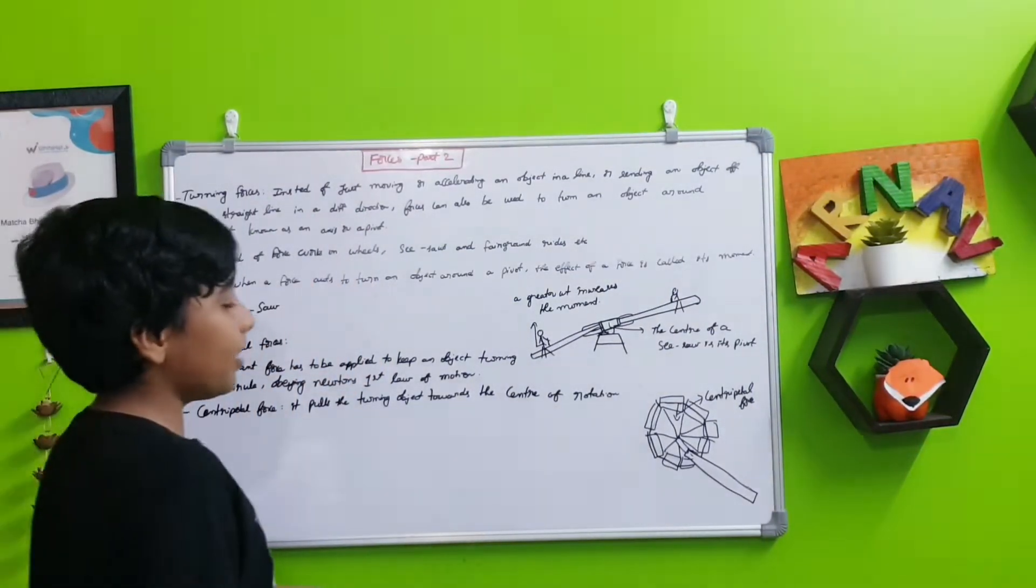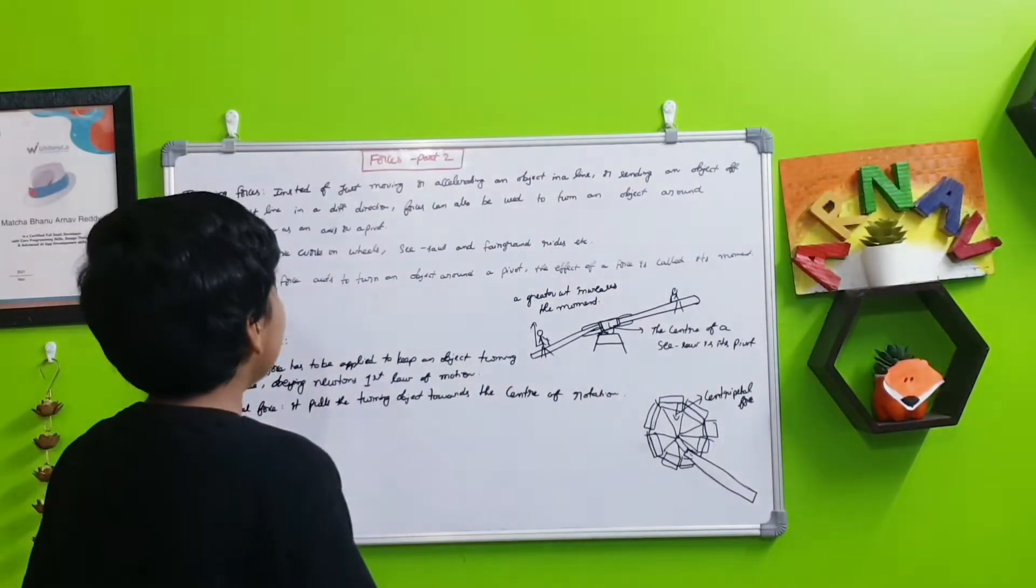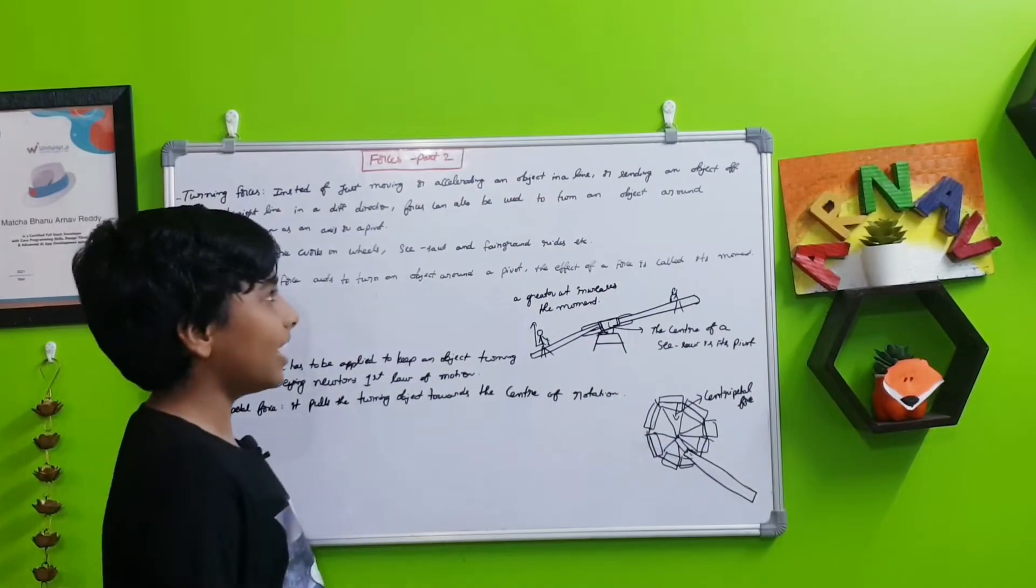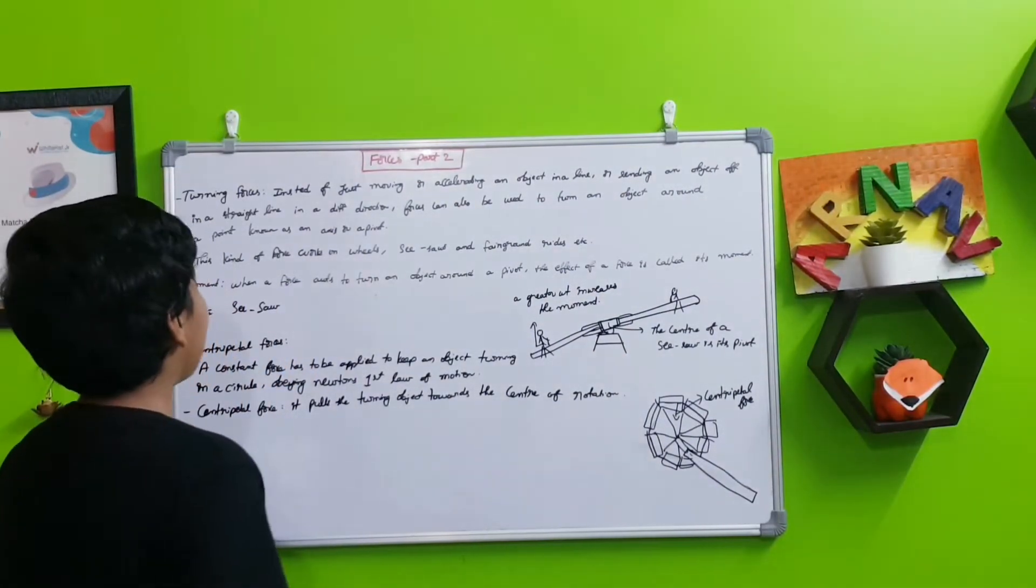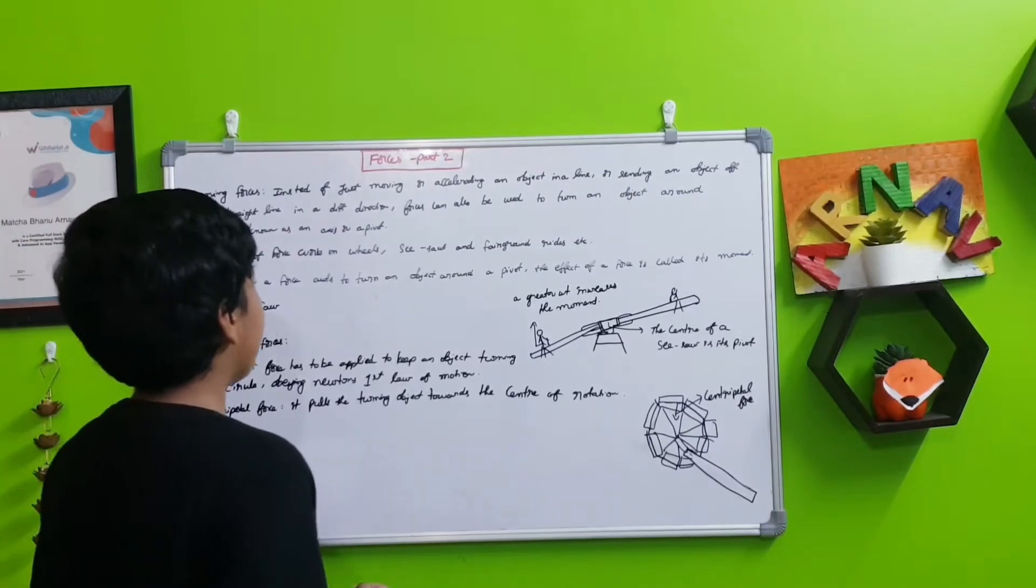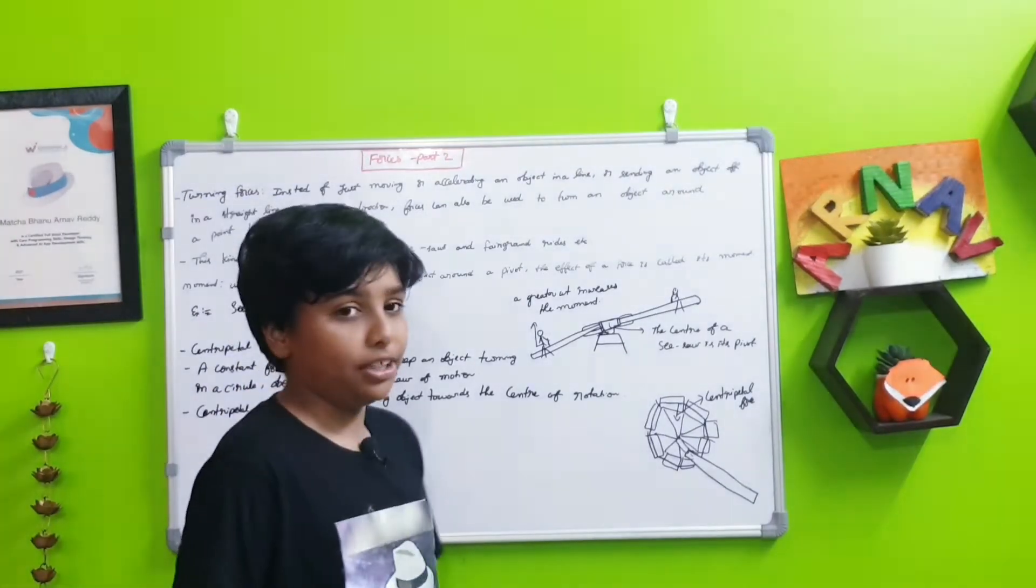Let's start. First, turning forces. Instead of just moving or accelerating an object in a line or sending a force in a straight line in a different direction, forces can also be used to turn an object around a point known as an axis or a pivot.